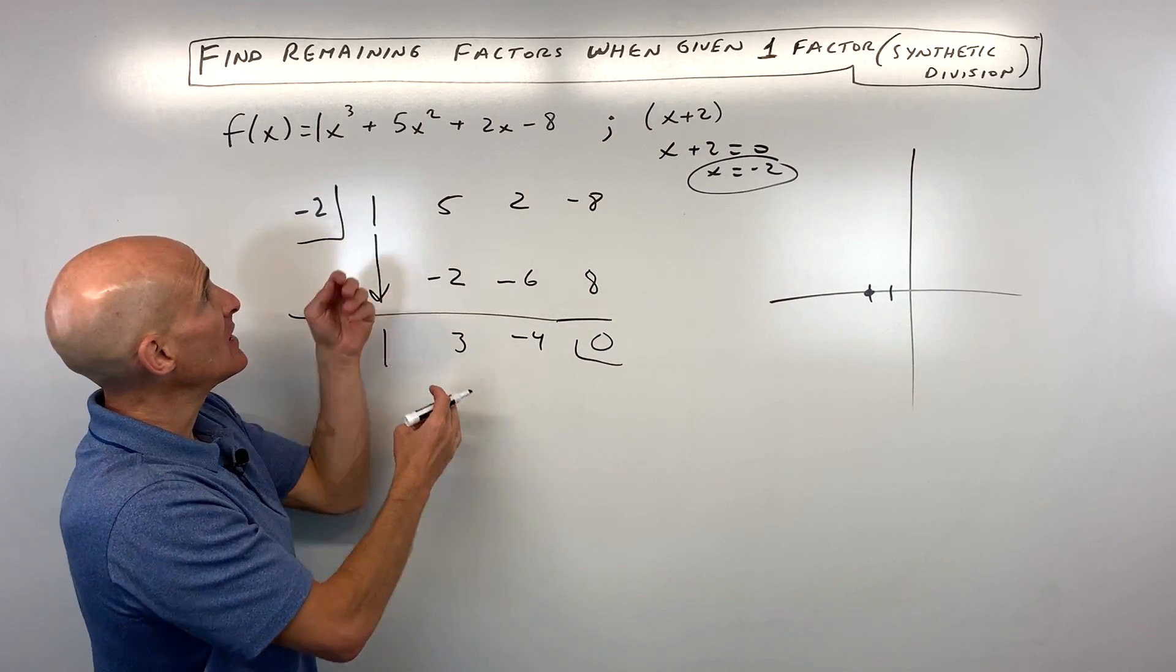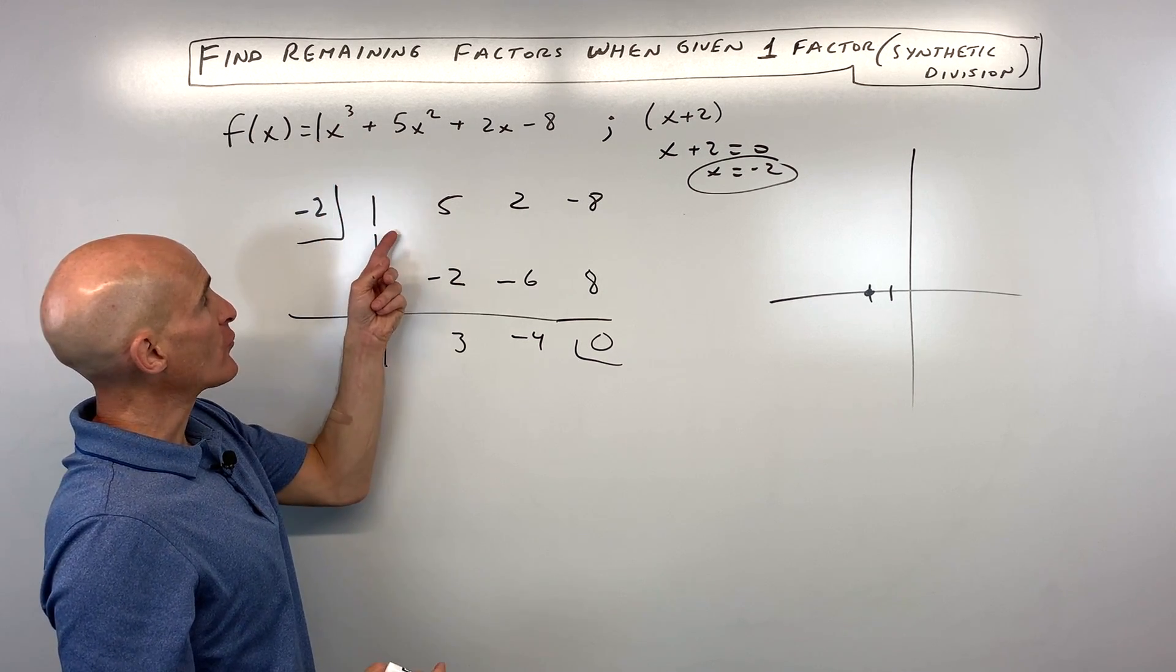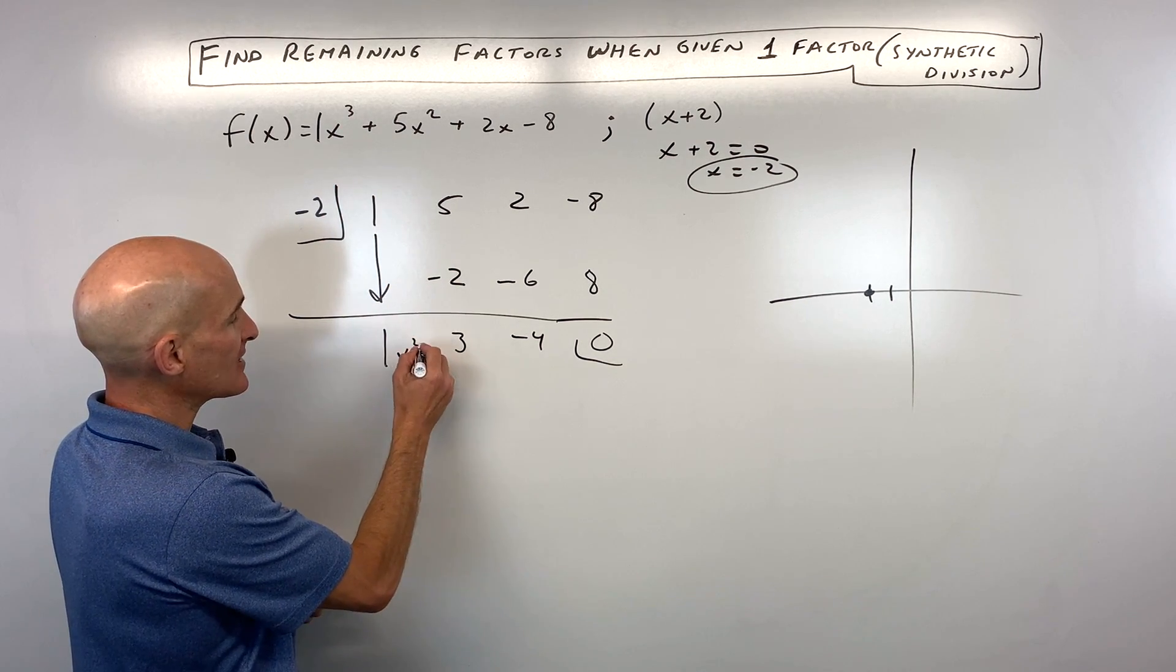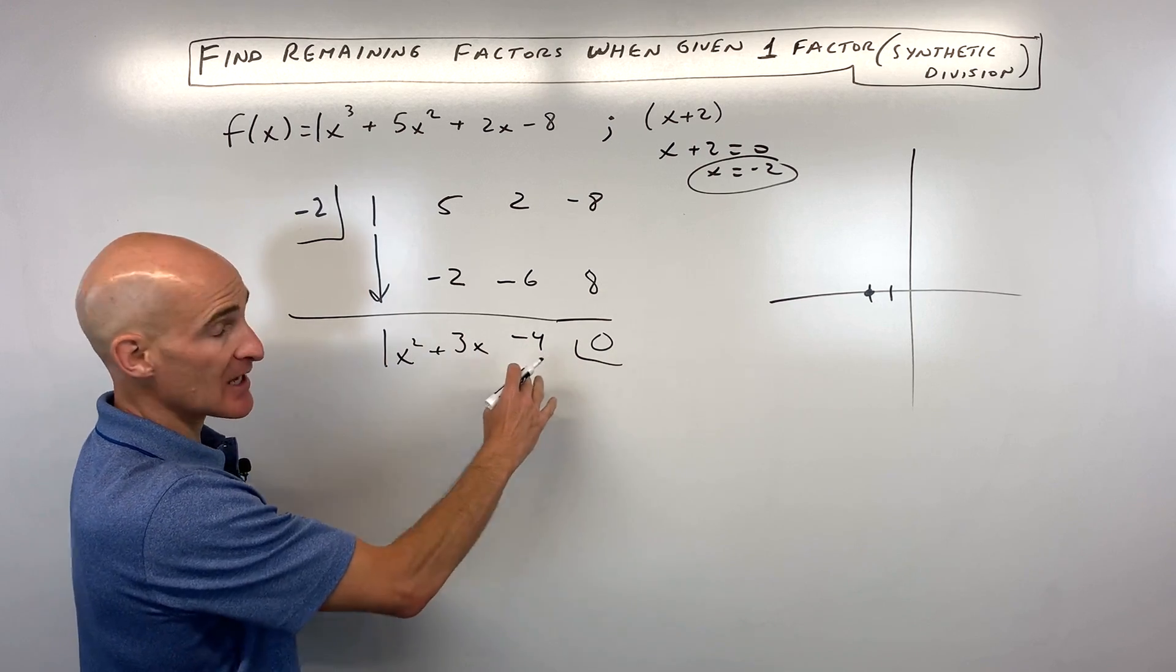And when you do the synthetic division, you go down by 1 degree. So you go from x³ down to x² in descending order.